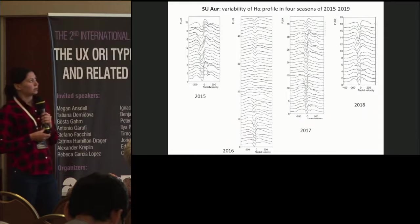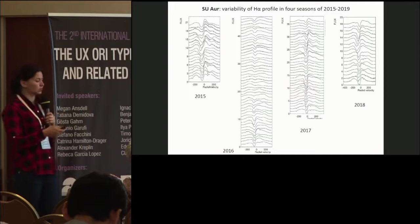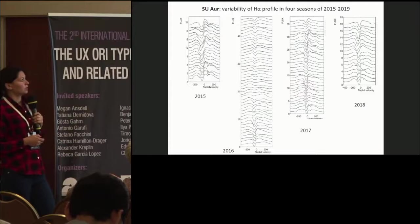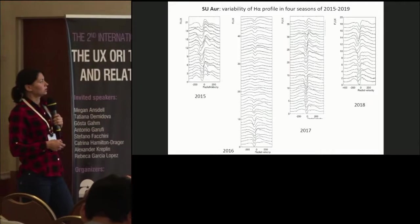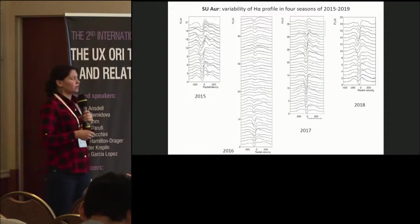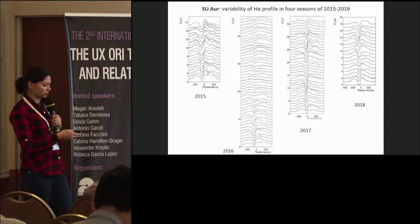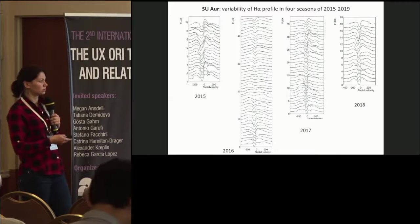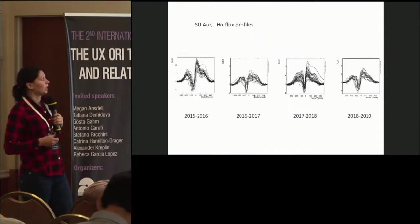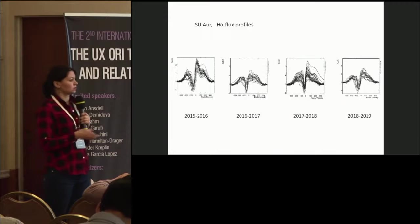The similar variability of H-alpha line profiles shows for second star, SU Auriga. And also we see that the star was active and unactive. Again, in 2016, this star was also stable, quite stable. H-alpha line profiles are shown here. We see the alternation of high and low activity in time scale of two years.